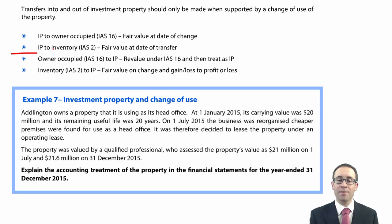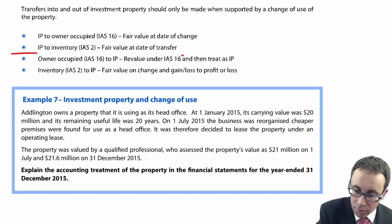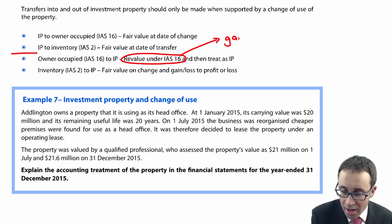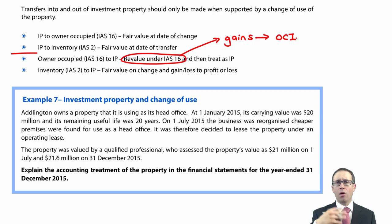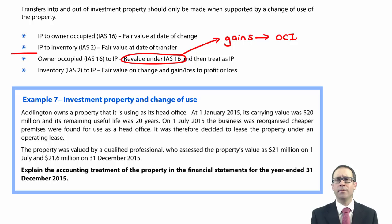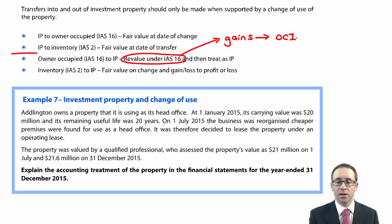In the other two scenarios — where property moves from IAS 16 or IAS 2 into investment property — treat it as normal under IAS 16 first. Before you transfer it, revalue it under IAS 16, so any gains go to other comprehensive income. That up-to-date fair value then becomes the new carrying value of your investment property, and subsequently any gains or losses on fair value go to profit or loss under IAS 40.